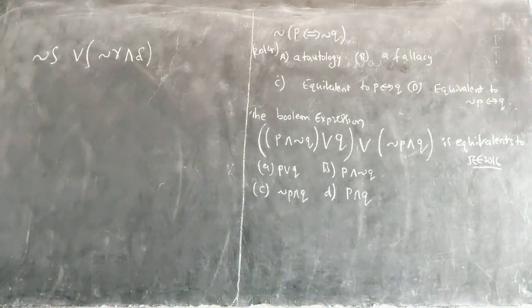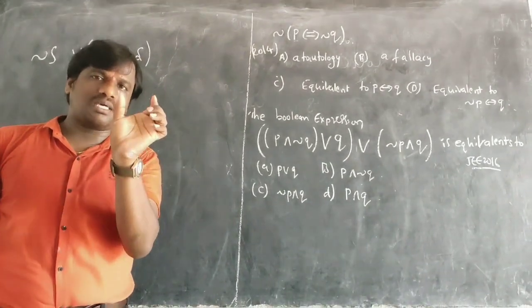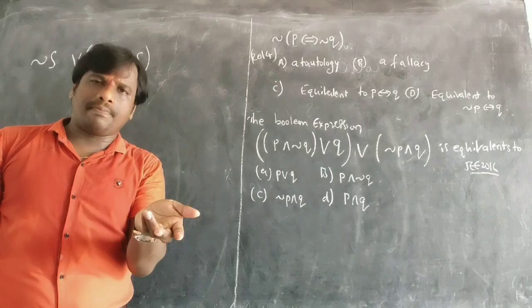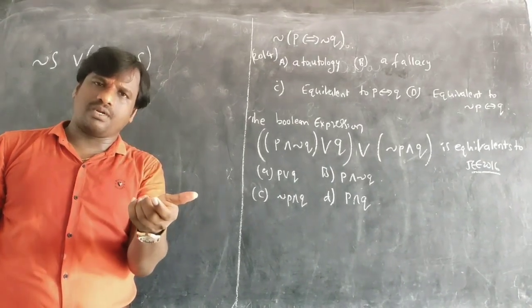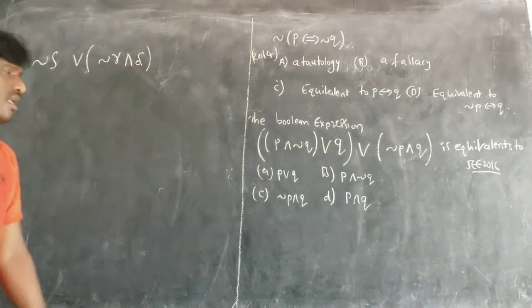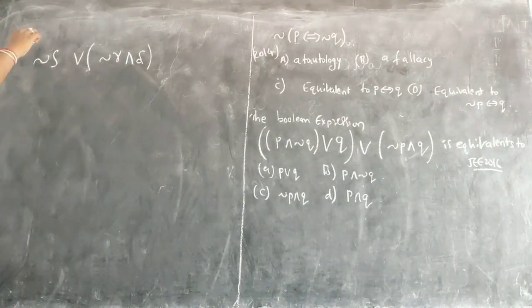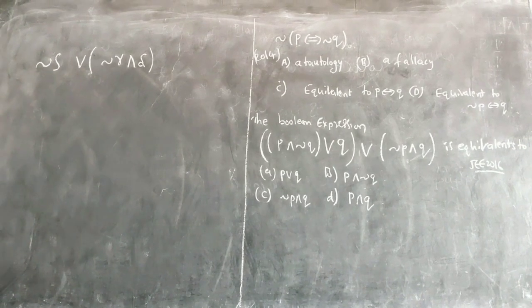Now here, this question, the previous question, the same question, 2015 question, I explained using the property, right? Without property, you can use the table and you can do it. Let us see the table, is it correct or not? Let us see the table, negation of this only answer. So how to see the table?